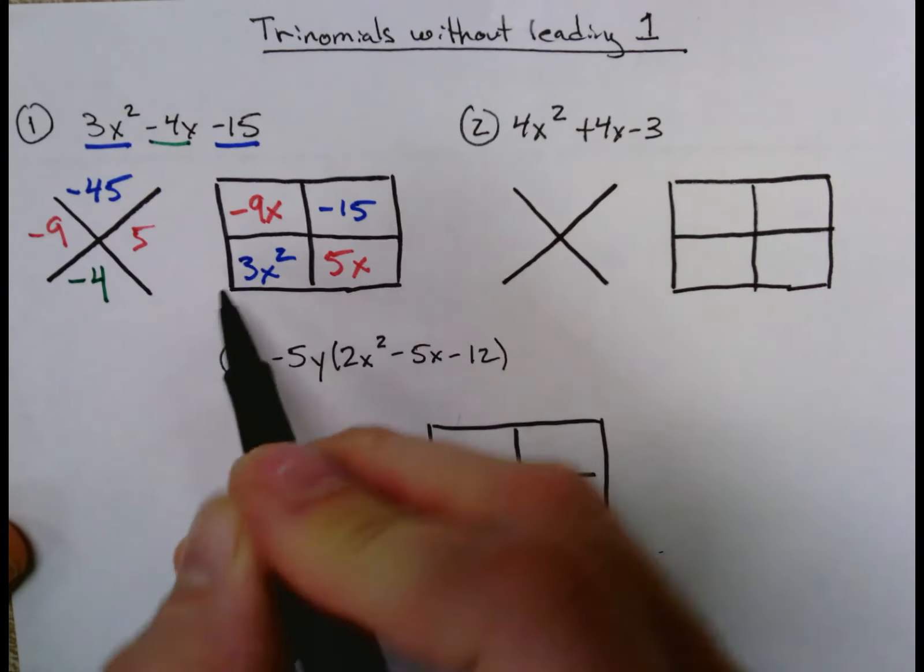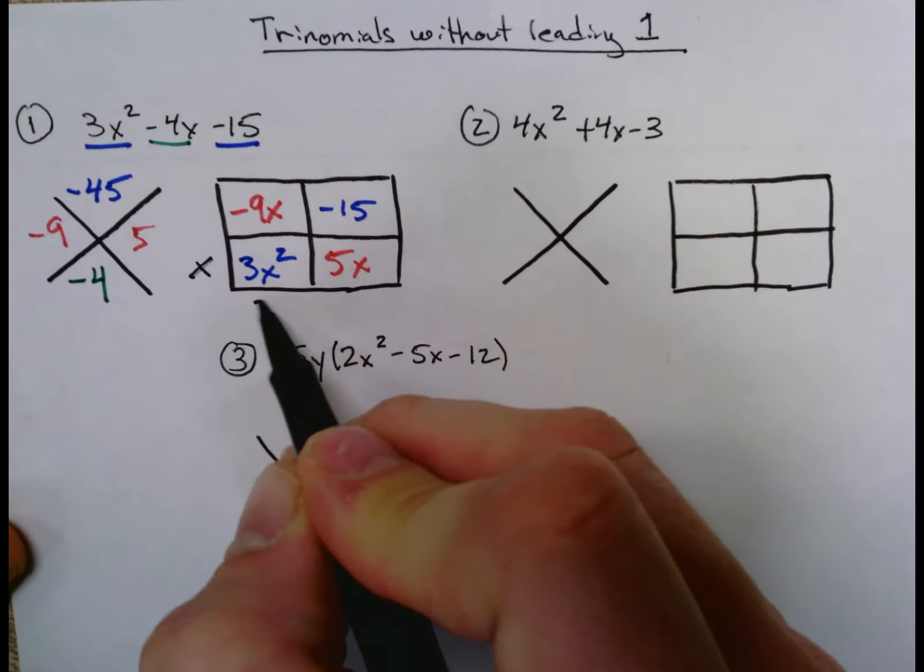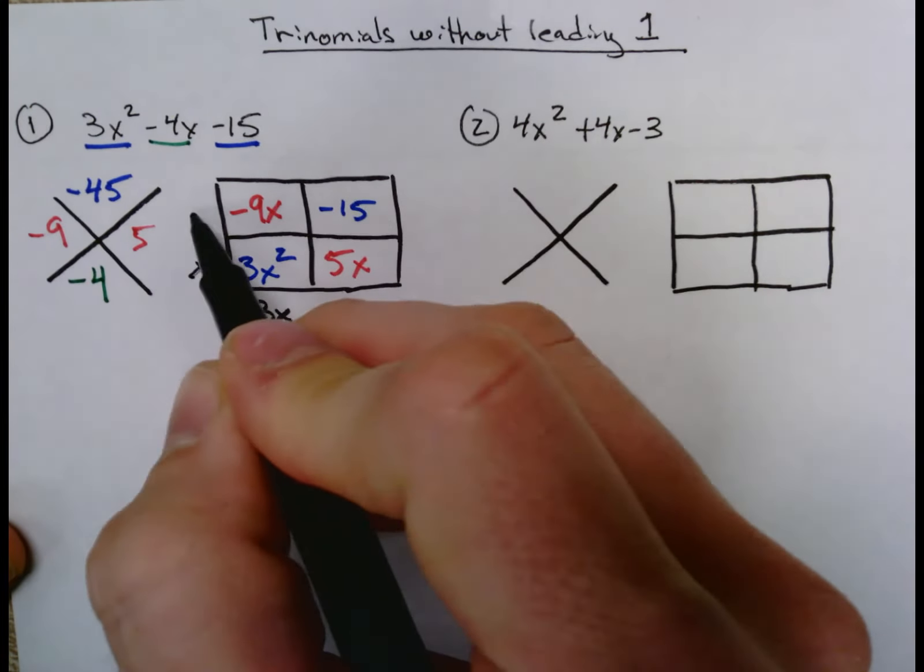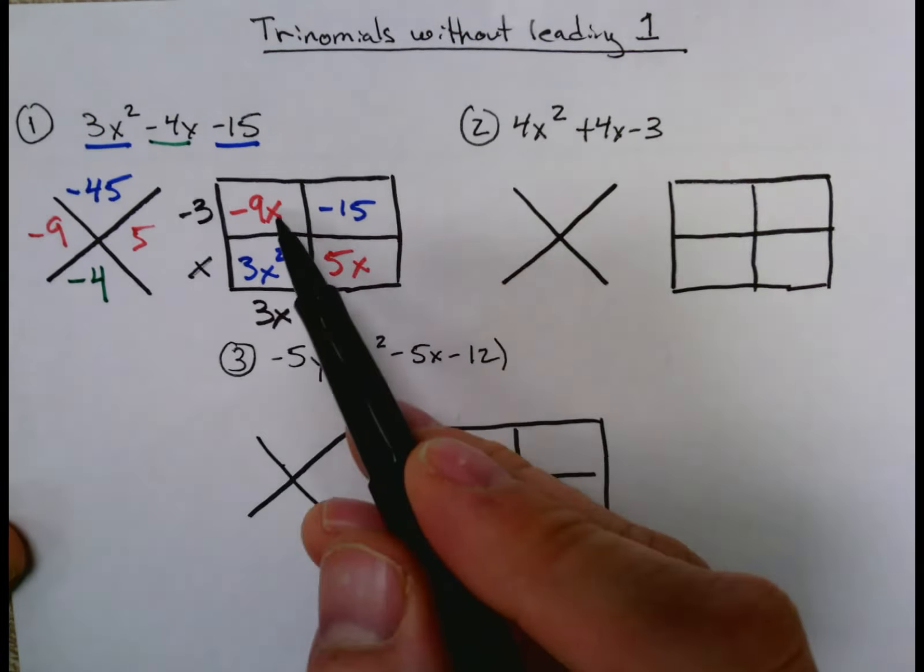Looks like I cannot pull anything out besides an x here. This must be a 3x then, which makes a -3 in order to get -9x. This has to be a +5, and that works because 5 times x is 5x, 5 times -3 is -15. And your factors are (3x + 5)(x - 3).